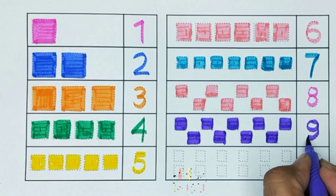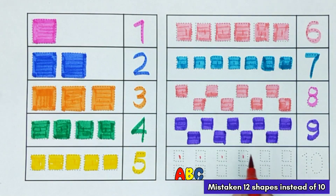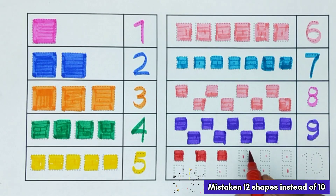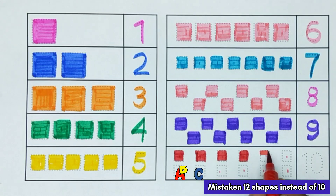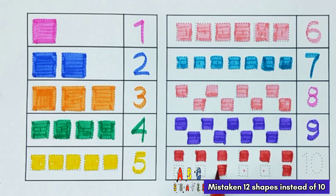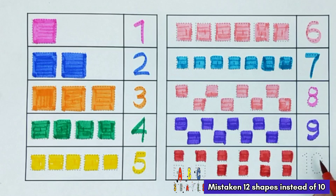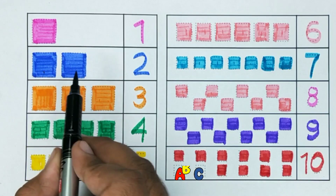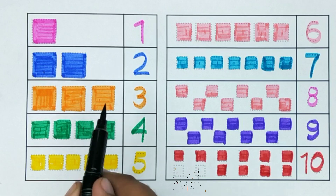This is number 9. 1, 2, 3, 4, 5, 6, 7, 8, 9, 10. 1, 0, 10. This is number 10. Now we repeat. 1 — number 1. 1, 2 — number 2. 1, 2, 3 — number 3.